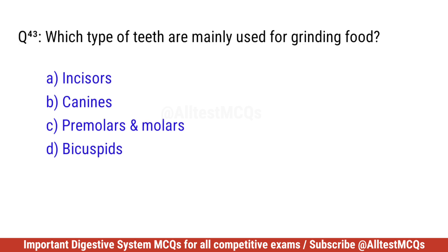Question number forty-three. Which type of teeth are mainly used for grinding food? Correct option is C. Premolars and molars.